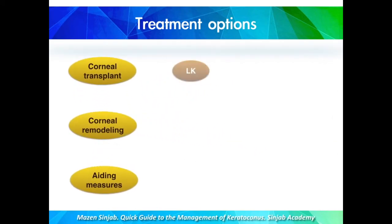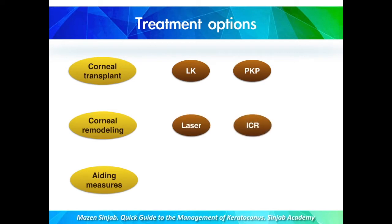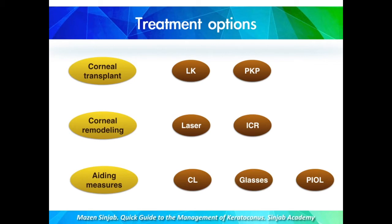There are two types of corneal transplant: lamellar keratoplasty and penetrating keratoplasty. Corneal remodeling consists of two types: laser treatment and intracorneal rings, including myring. The aiding measures are contact lens, glasses, and phakic IOL implantation.